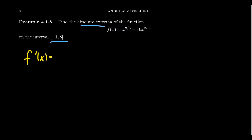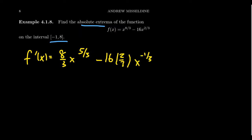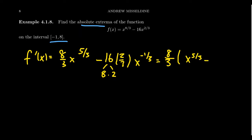Using the power rule: f'(x) = (8/3)x^(5/3) − 16·(2/3)x^(−1/3), which simplifies to (8/3)x^(5/3) − (32/3)x^(−1/3). We need to identify when this equals zero or when it is undefined. The best approach is to write this as a fraction and factor. Notice that 16 factors as 8 × 2, so we can factor out 8 and the fractional coefficient (1/3).